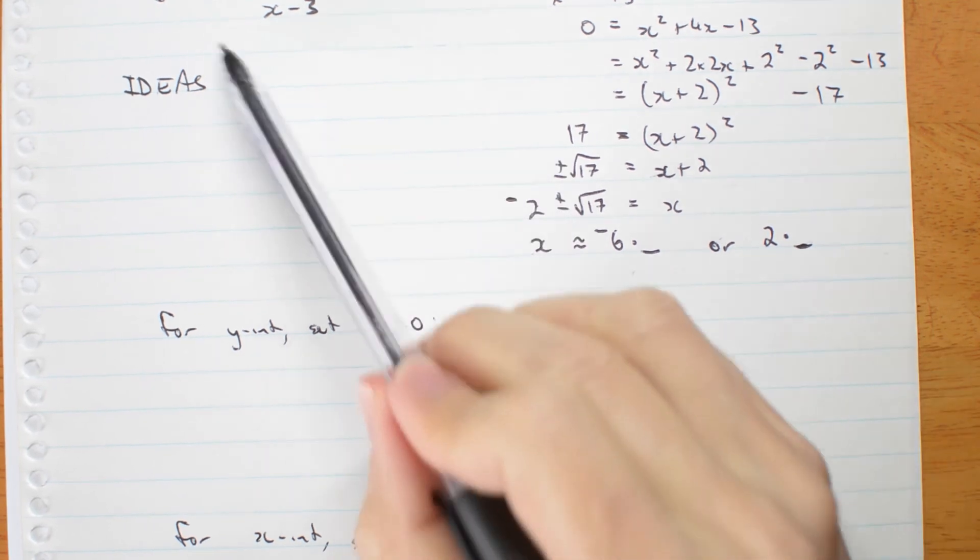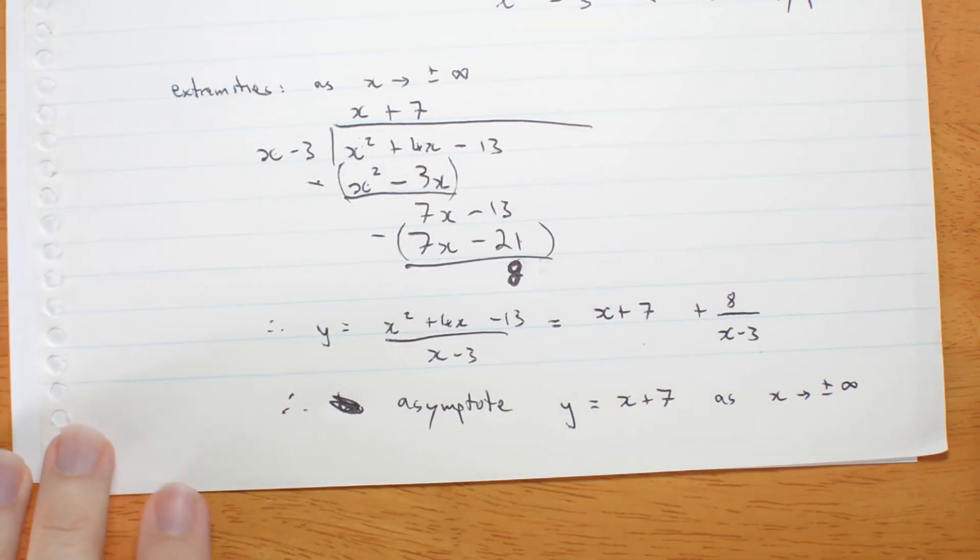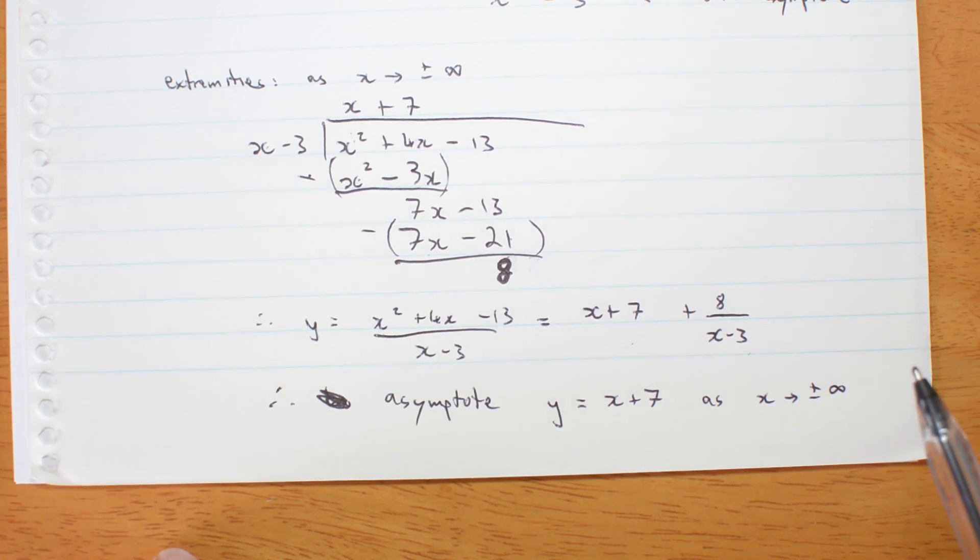Stationary points, special points. Why don't we try sketching it and then deciding whether we need to know any other particular values.